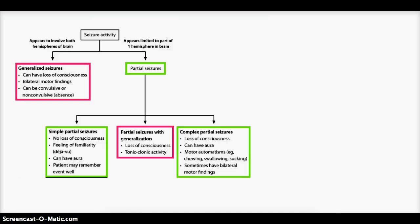In simple partial seizures, looking more into it, there might be a feeling of familiarity, such as the patient might feel deja vu, or have an aura, or even have an olfactory hallucination. Let me give you an example, such as the patient might smell something burning before he starts to seize. That's an olfactory hallucination. And patient may remember the event very well.